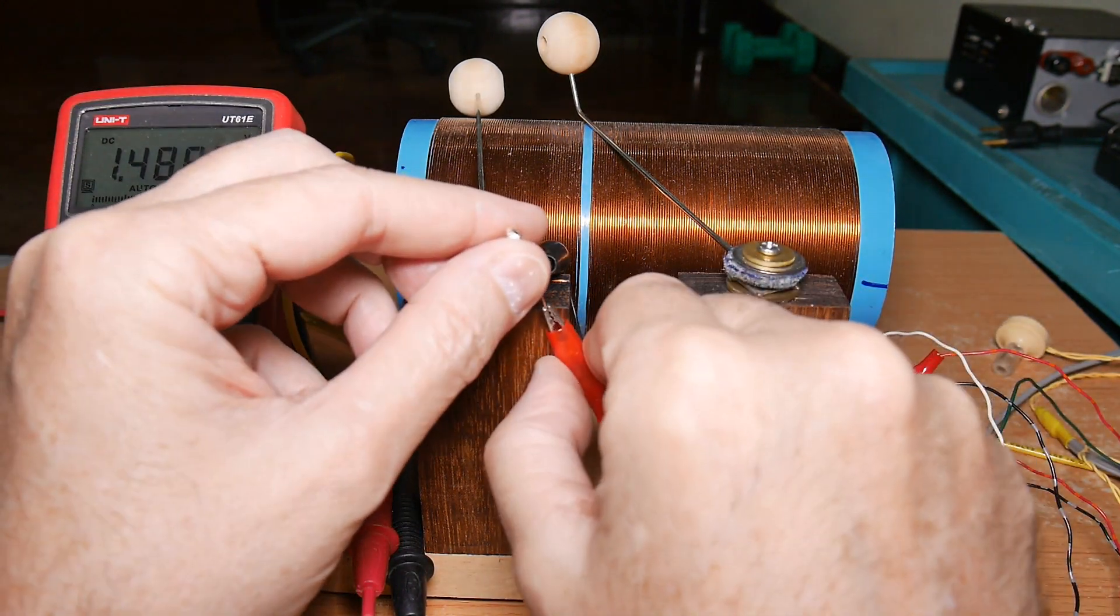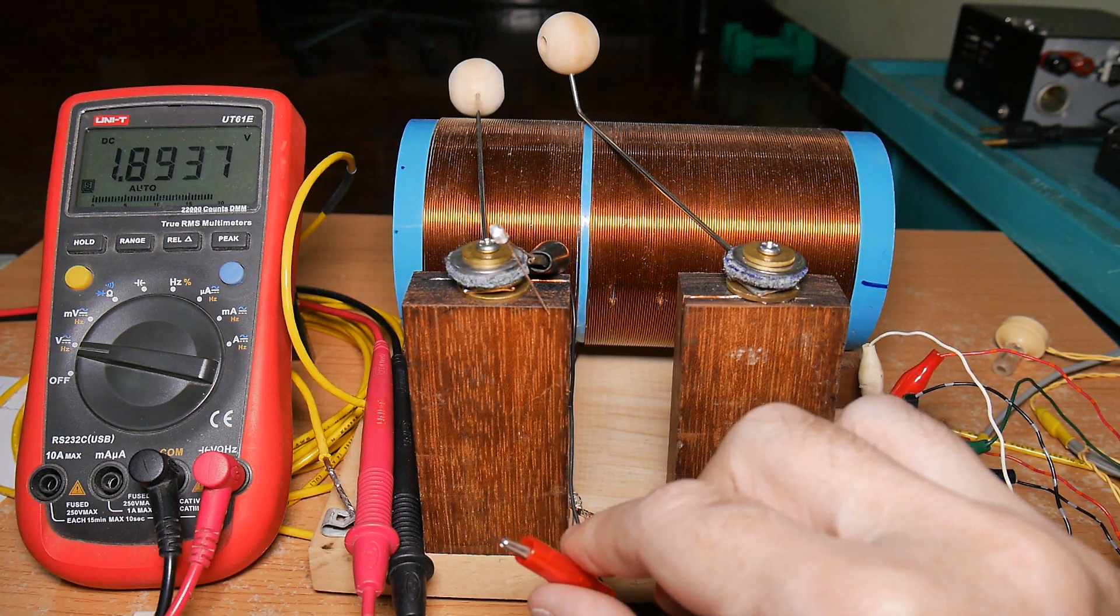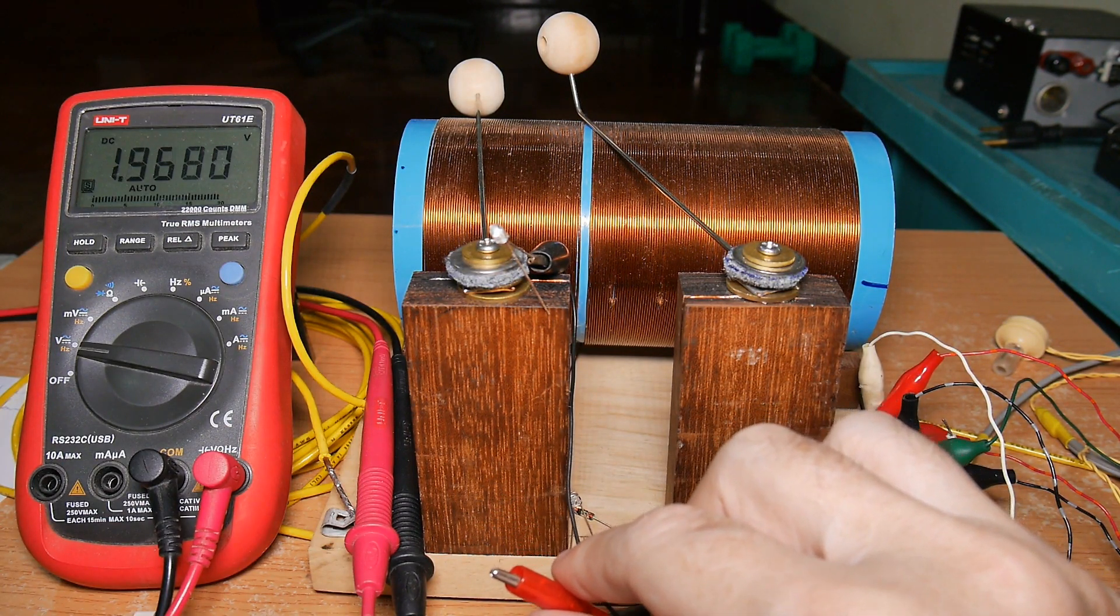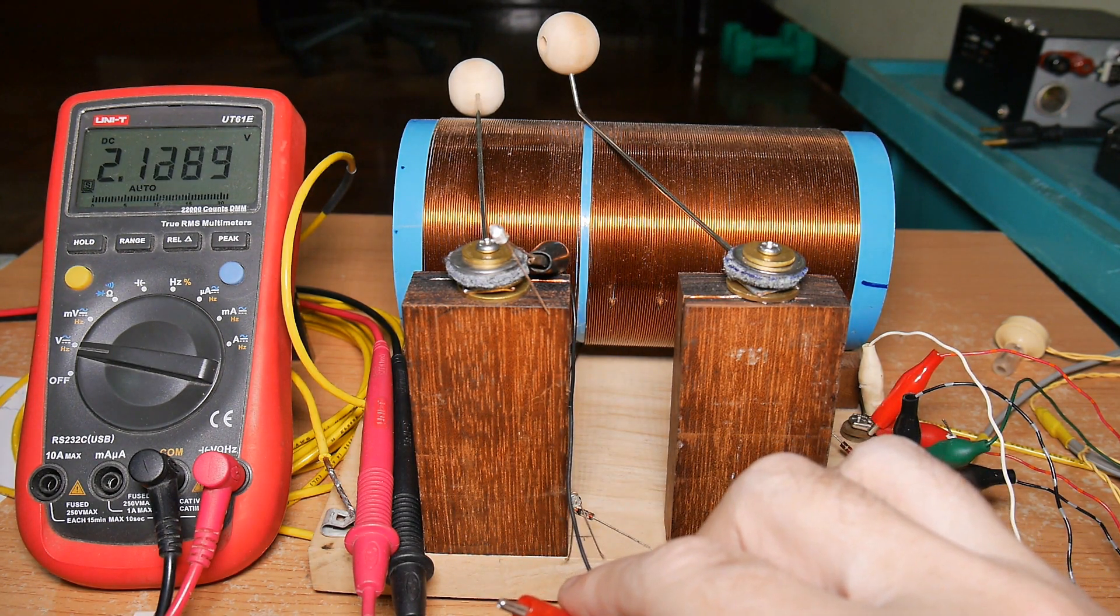One thing I can do is disconnect this LED, and my guess is the voltage jumps up. The capacitor has to fill. It'll go over 2 volts. So how can I get more power out of this thing?